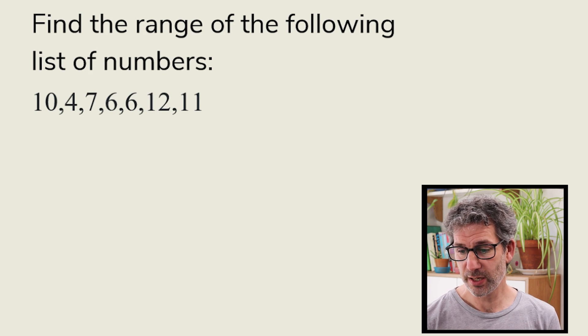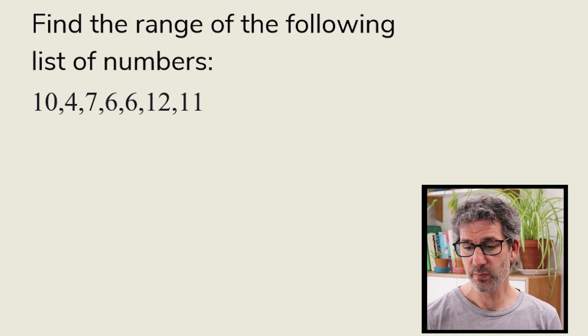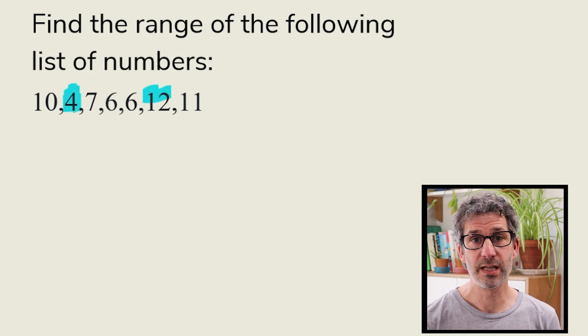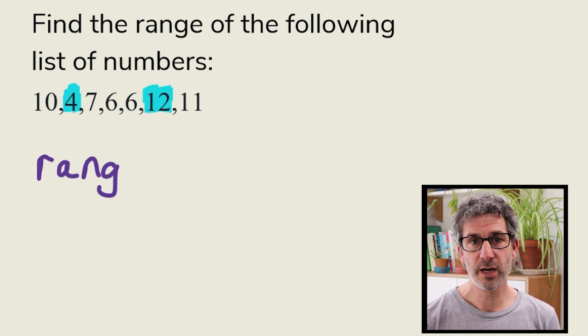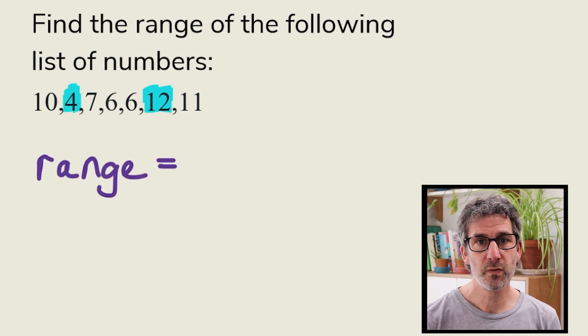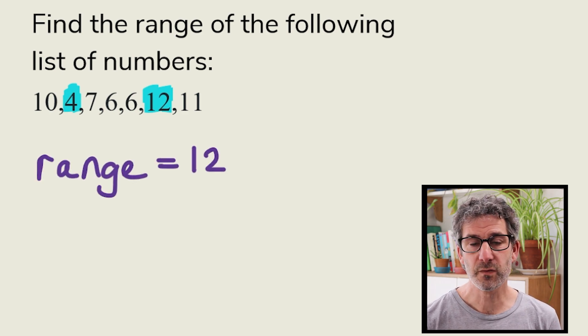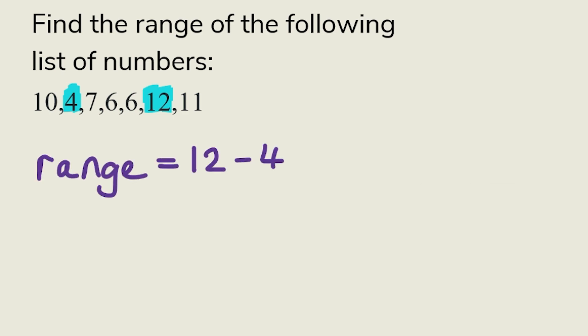So in this example, we've got a small data set with seven numbers. The smallest value is 4 and the largest value is 12. So to find the range, we just do 12 minus 4, which is 8. So the range is 8.